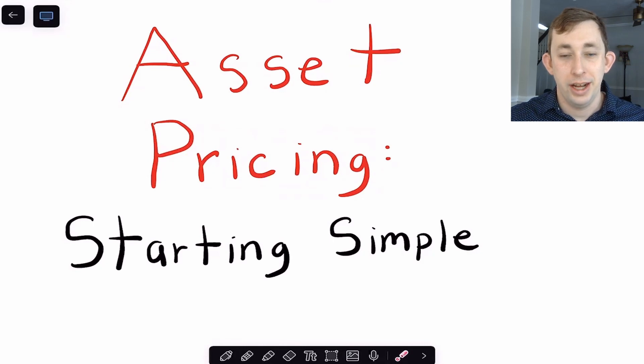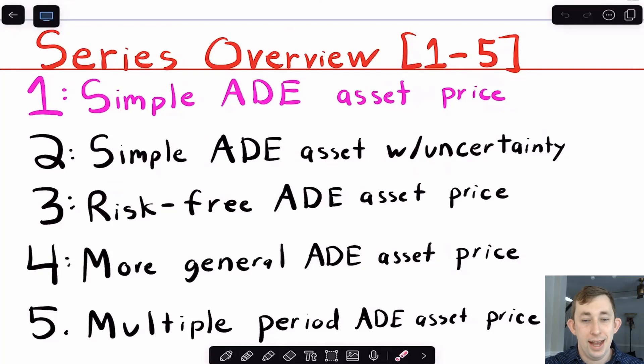Just to give you a little more information, let's talk about how I foresee laying out this series. This asset price struggle series is going to have a lot of parts. Here's sort of the first five that I envision. Again, this doesn't include things like Lucas tree pricing, which would be future parts of this series.